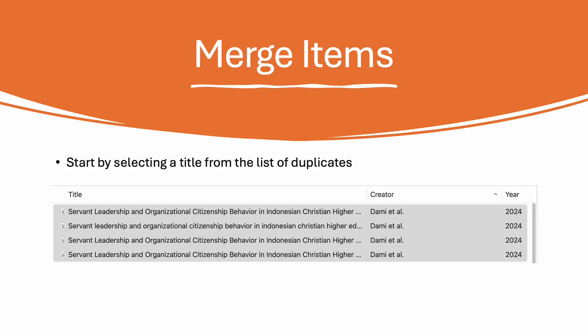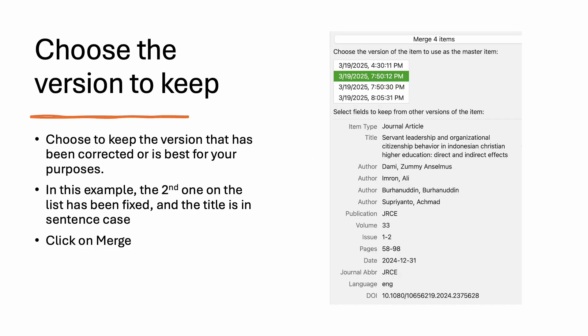To merge items, start by selecting a title from the list of duplicates. Then choose the version to keep — keep the version that has been corrected or is best for your purposes.